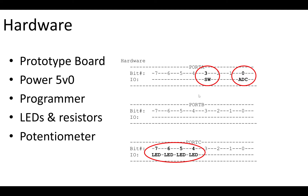Looking at some hardware: it's a prototype board powered at five volts — could be 3.3 volts but it's five at the moment. I'm using a PICkit 3 programmer today. There's an LED, a switch attached to Port A.3, an ADC on Port A.0, and LEDs on Port C pins seven, six, five, and four.